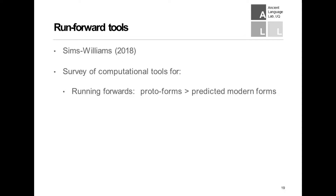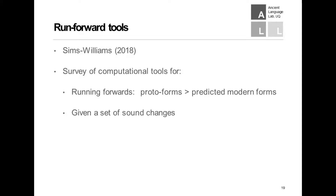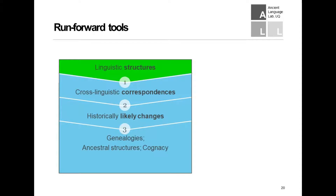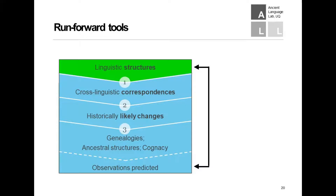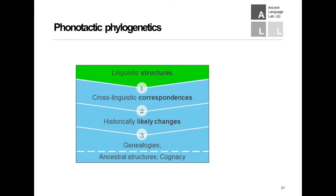In a recent paper, Patrick Sims-Williams surveys six decades of work building computational tools for running forward in time from proto-forms to predicted modern forms given some set of sound changes. A tool like that also requires someone to tell you what the proto-forms are and what the sound changes are. Given your ancestral structures, your genealogy, your inferred changes, they will tell you what modern observations are predicted by them, which can then be checked against real observations. Useful as these are, they also aren't going to be a quick fix for accelerating the whole comparative method.